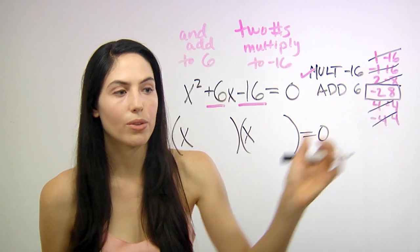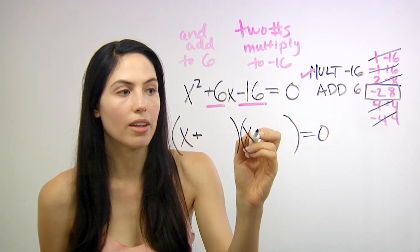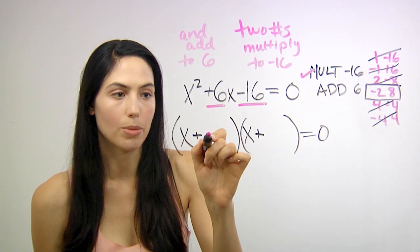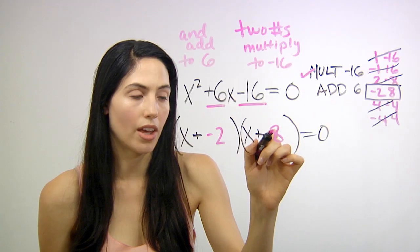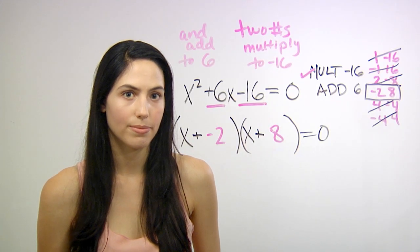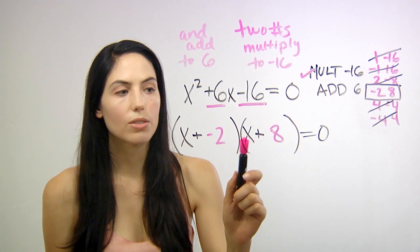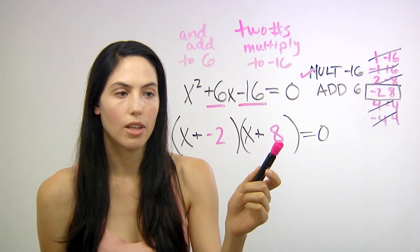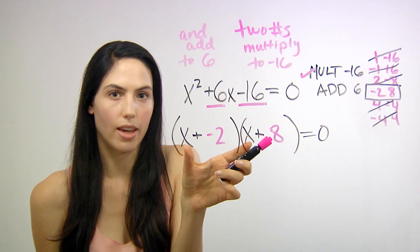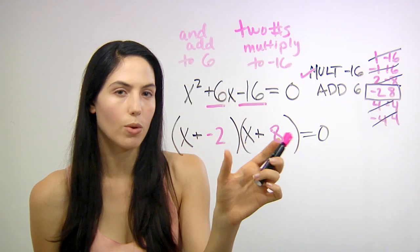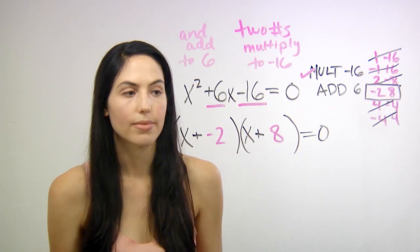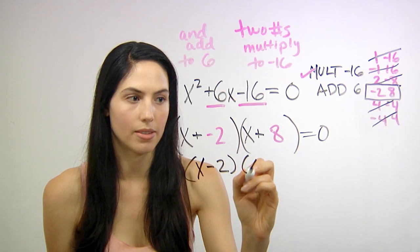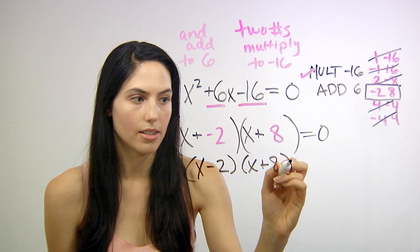Now you've found your two numbers and you just need to fill them into your factors. You've found negative 2 and 8, so you simply put negative 2 here and positive 8 there, and you've found your factors. You could also switch these numbers — the order doesn't matter, because both factor terms start with x. So the order actually wouldn't matter.